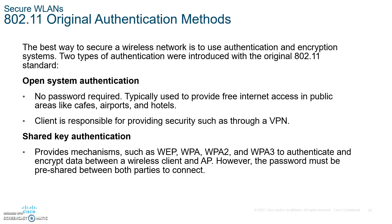The third method is authentication. Open system authentication is what you don't want — it means anyone can connect and no password is required. If you ever must connect to open Wi-Fi, make sure you have a VPN. You can get a free VPN such as OpenVPN — just Google it — and we'll set that up in the ethical hacking course.